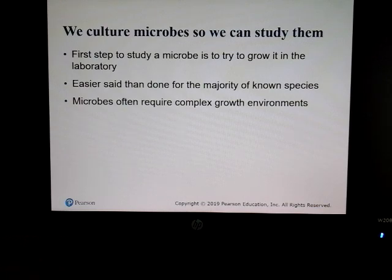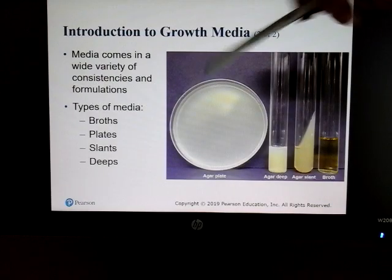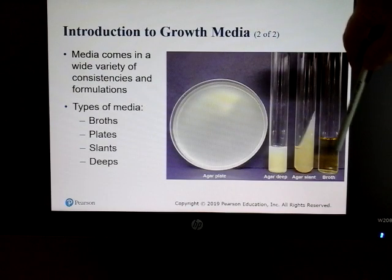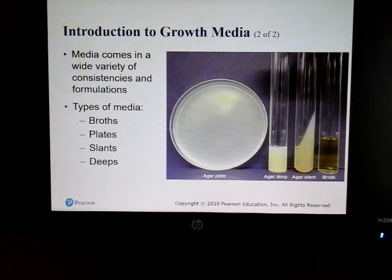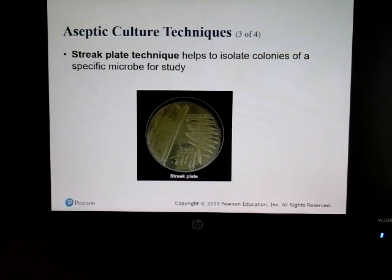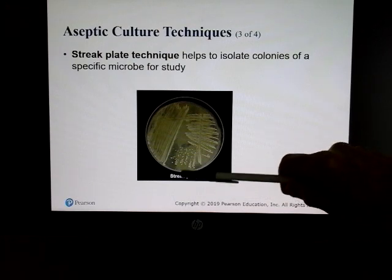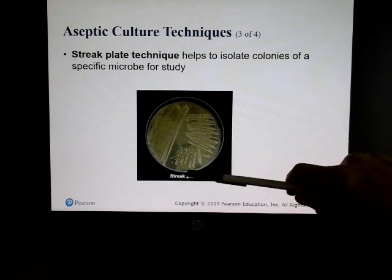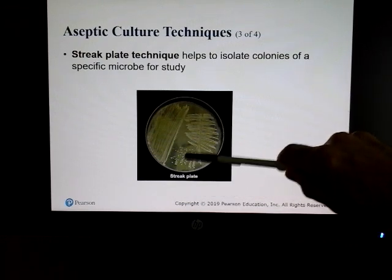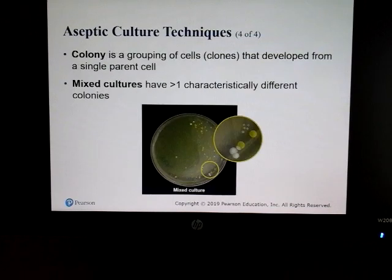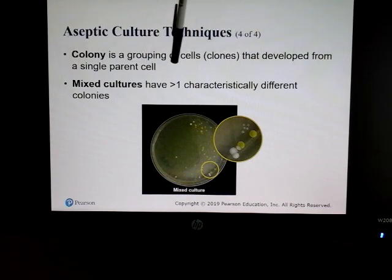When you have a patient and want to know what their infection is, you first have to culture the microbes. We grow microbes in a variety of ways: sometimes on a plate, sometimes in a liquid broth, sometimes in agar slants and deeps in tubes. You also want to isolate colonies — colonies arise from a single cell — so you can identify what's causing the infection.